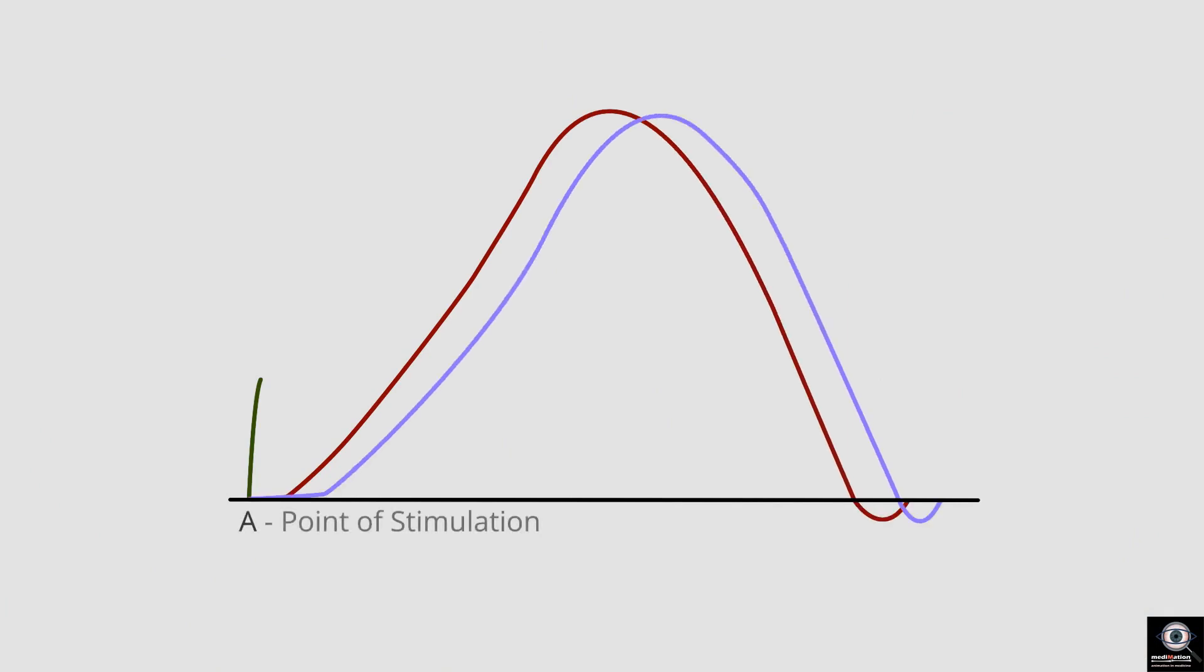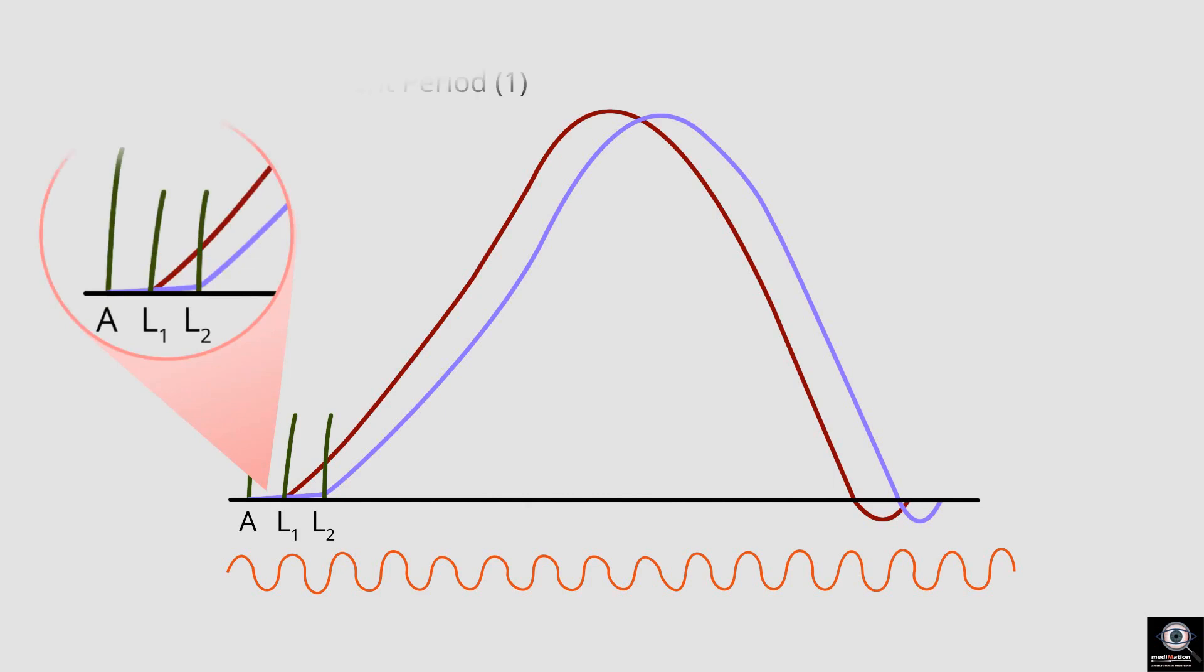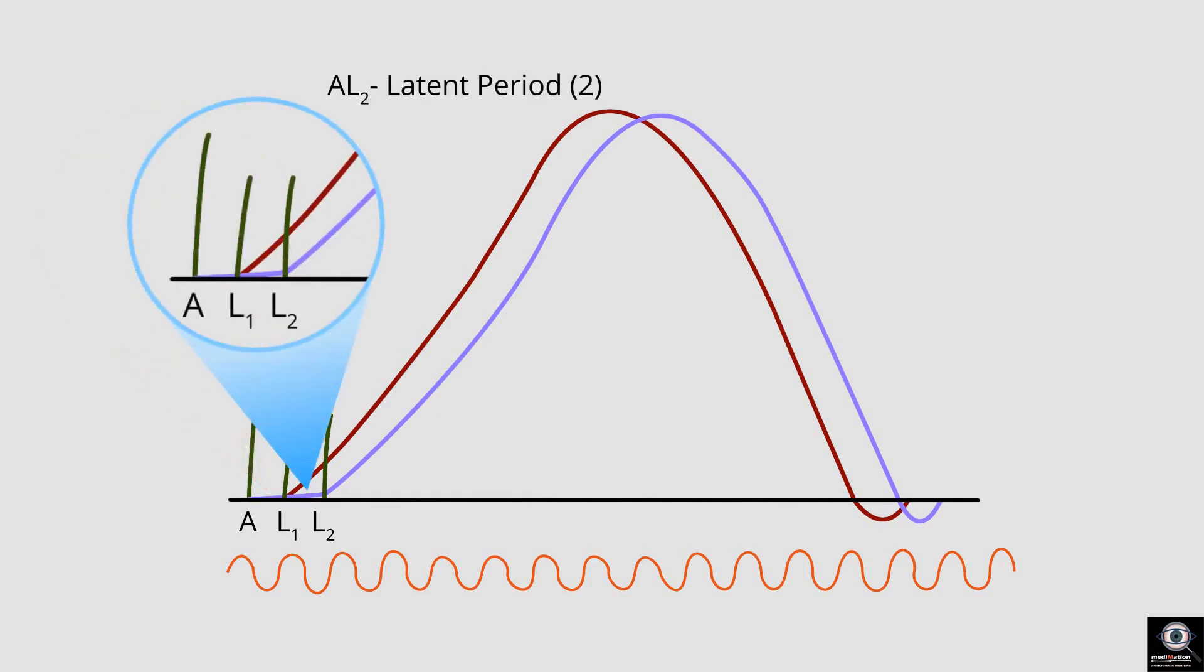Using the graph, we measure the latent periods in both the muscle twitches. The latent period for the muscle twitch stimulated from the muscular end and the latent period for the muscle twitch stimulated from the vertebral end.